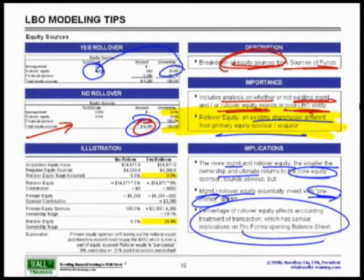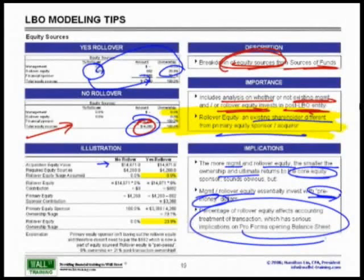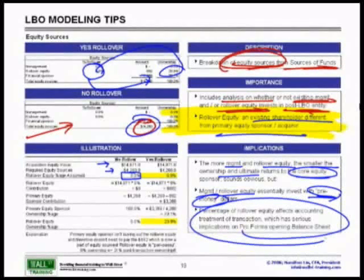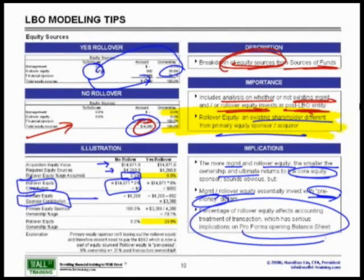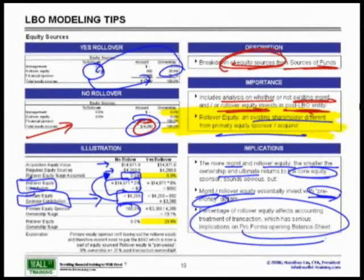Why does the magic happen and you go from 6% to suddenly a 21% equity stake? Let's look at the numbers. You buy this company for $14.8 billion. Per your LBO sources and uses, you need $4.26 billion of equity. In the no rollover scenario, the rollover equity contributes zero — how much does the primary equity sponsor have to contribute? The full $4.26 billion, meaning you own 100% and the rollover owns zero.